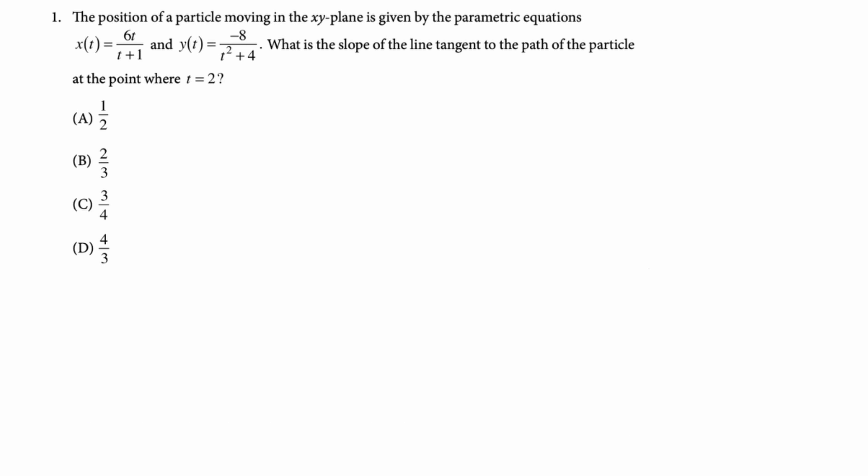To find y prime I'm first going to rewrite y to look like this. So just bring that denominator up to the negative first. I'm going to chain rule this. So y prime is going to be positive 8 t squared plus 4 to the negative second times 2t. Now we have to find x prime. I'm just going to use a quotient rule on this. So x prime of t is going to be bottom derivative of the top minus, don't forget it's minus, top derivative of the bottom and then all over the bottom squared.